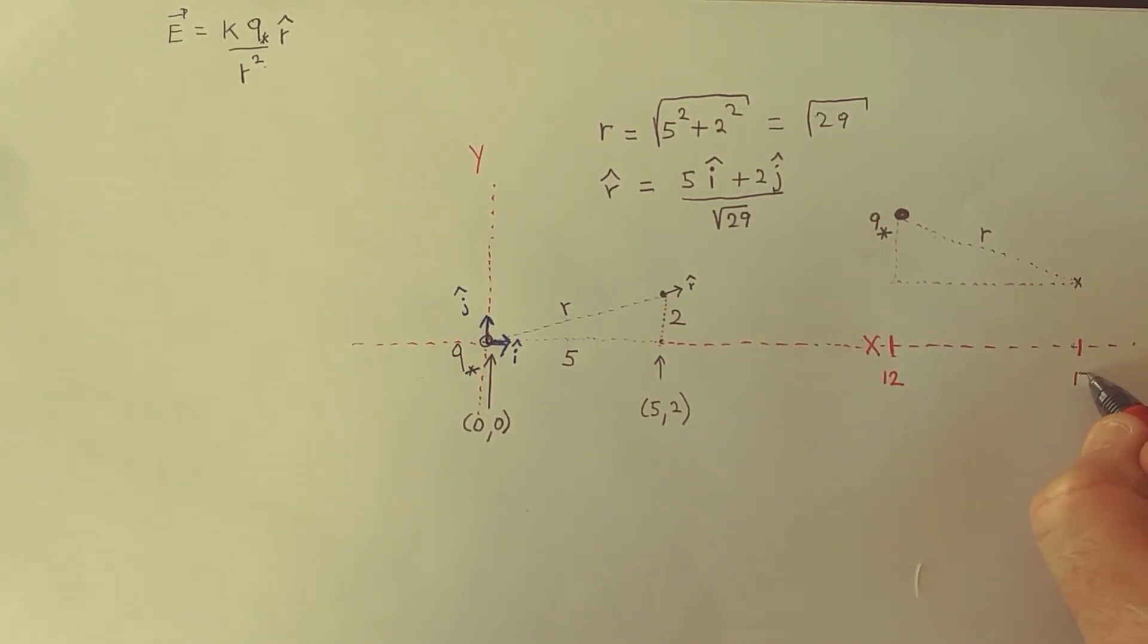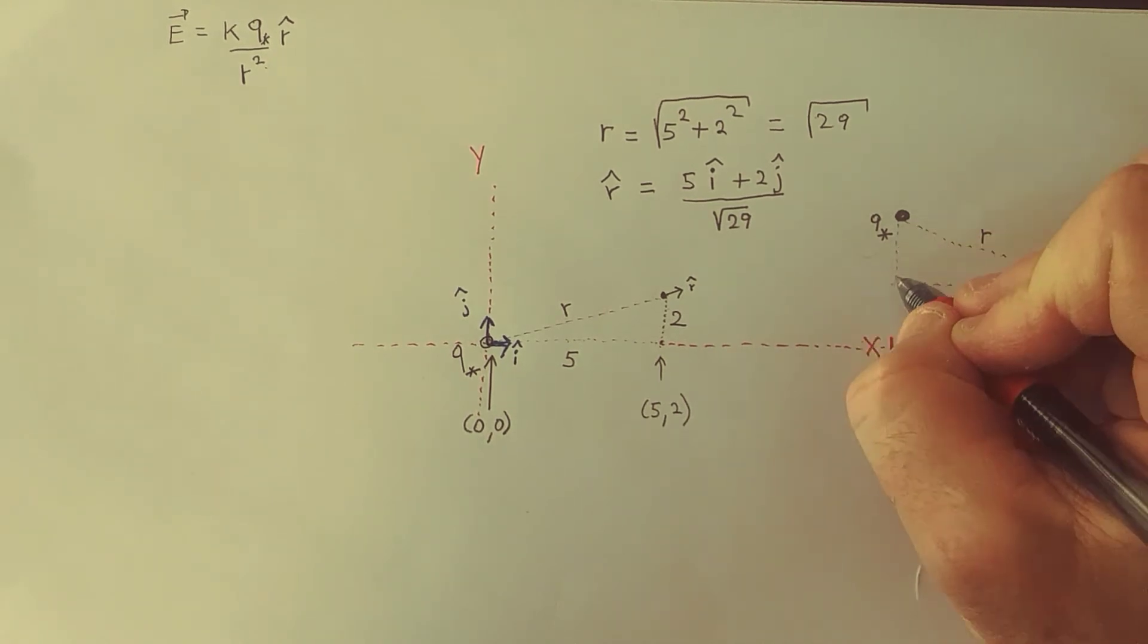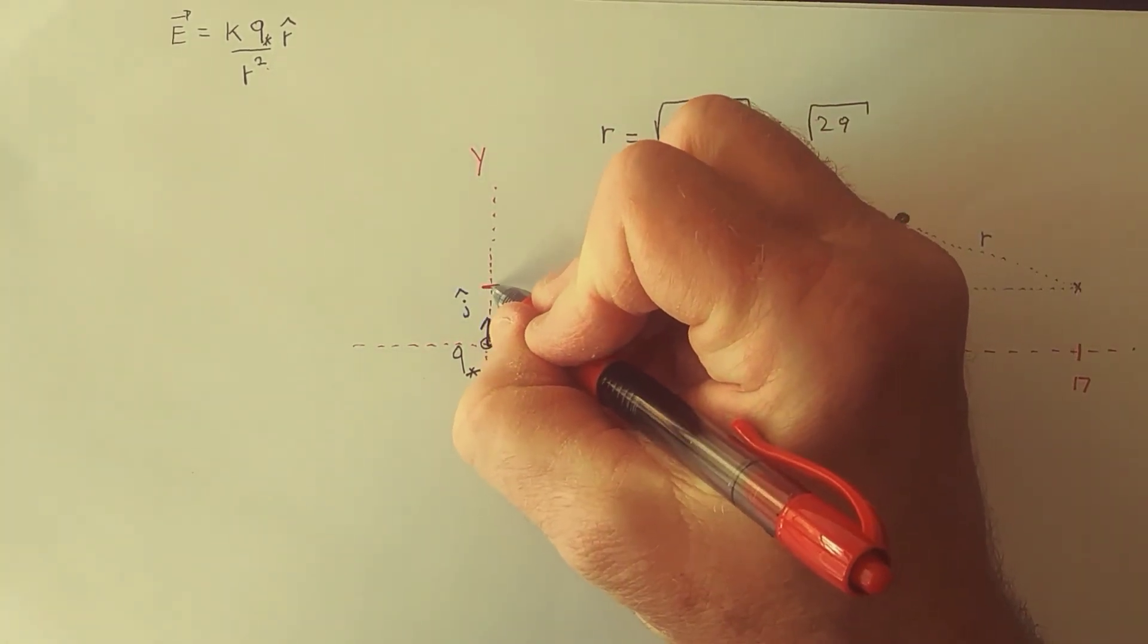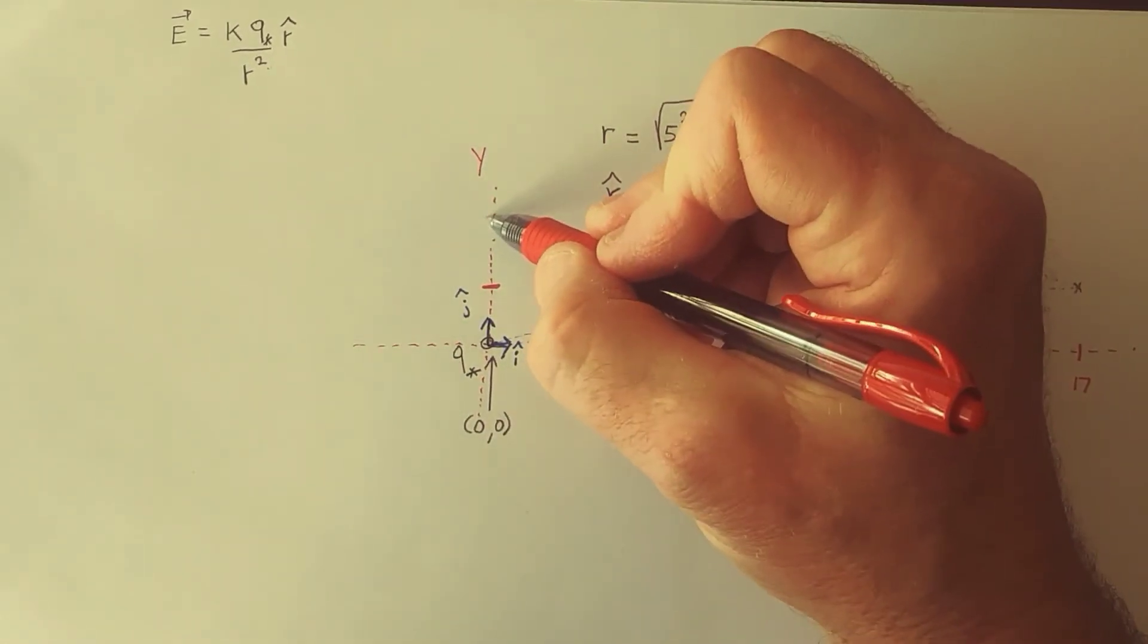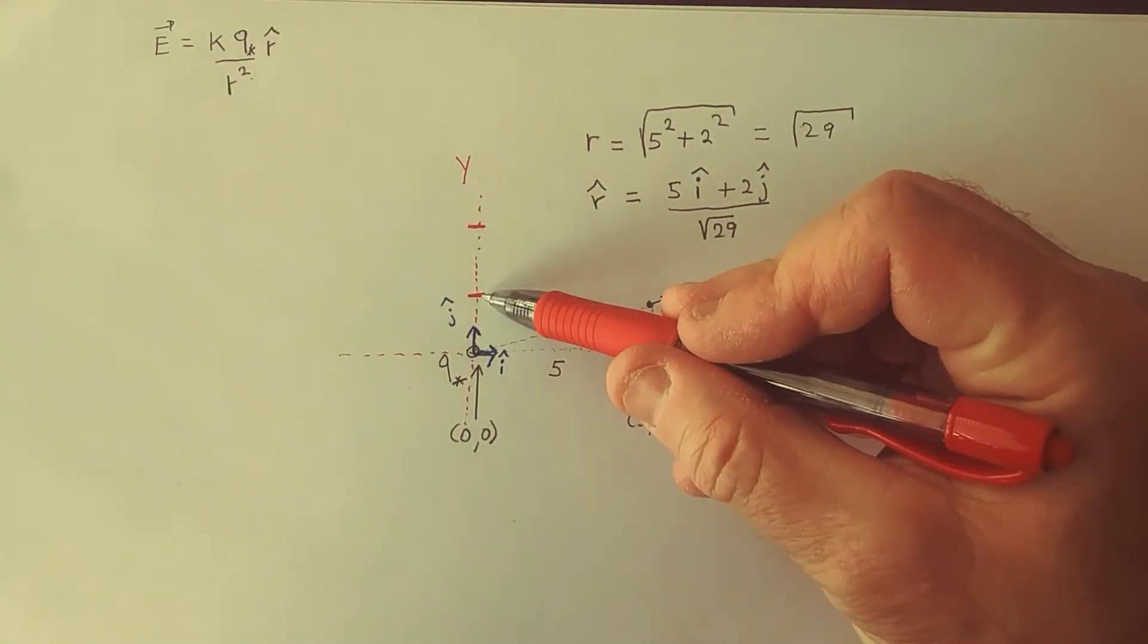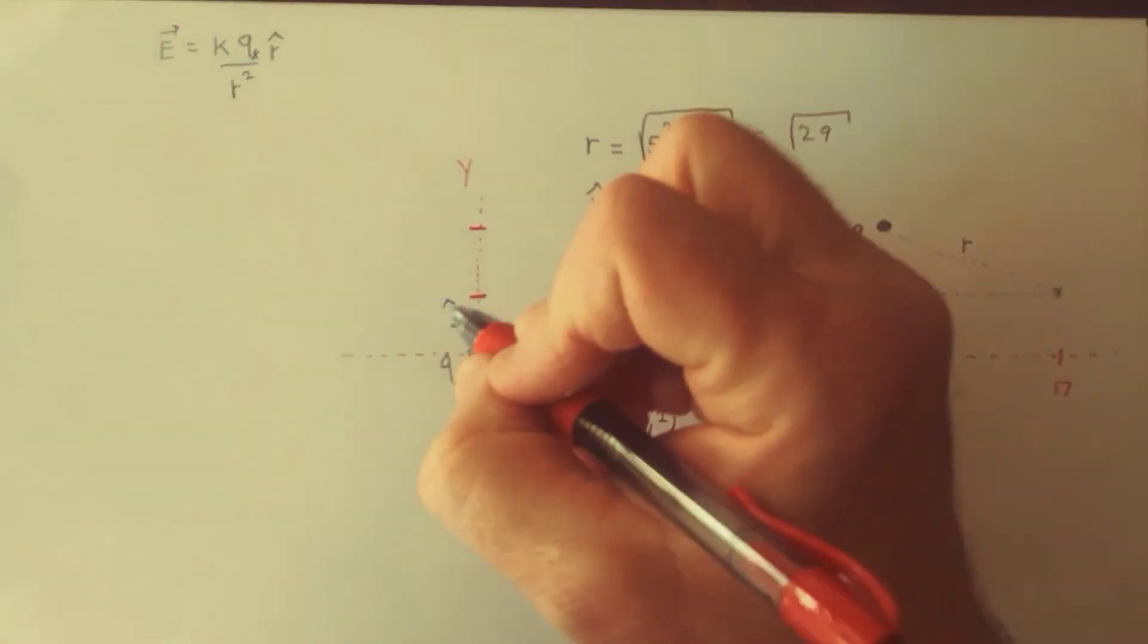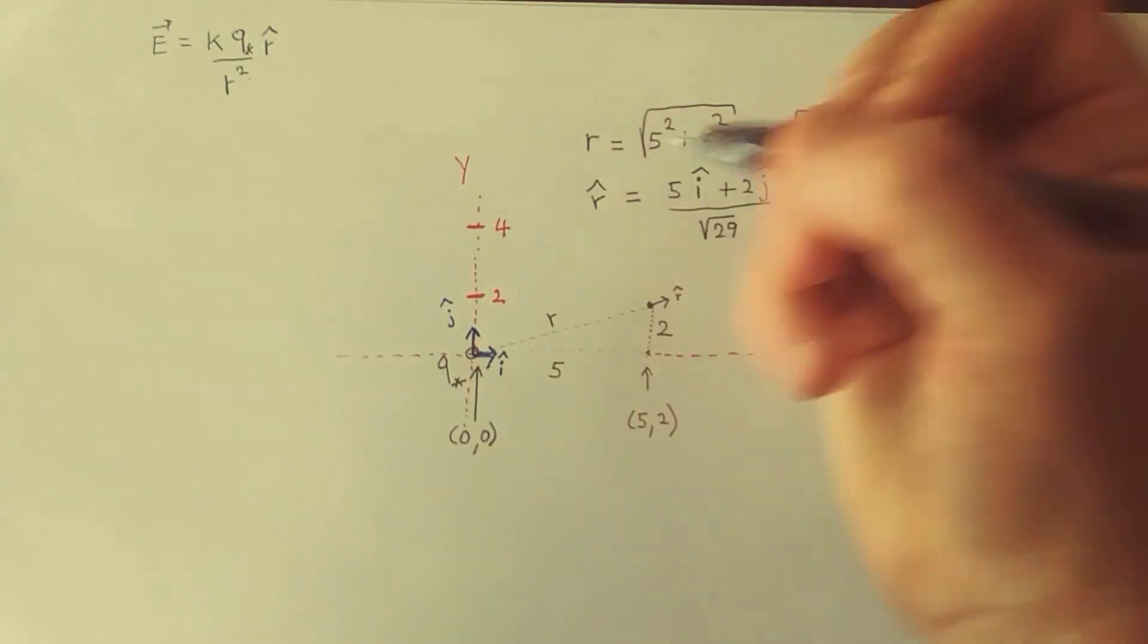So this is x equals 12 and this is maybe 5 more, so this is maybe x equals 17. And then we care about this side which goes from there to about there. And that could be, if we said this was 2, then that looks like that might be 2 as well. So this is y equals 2 here and this is y equals 4.